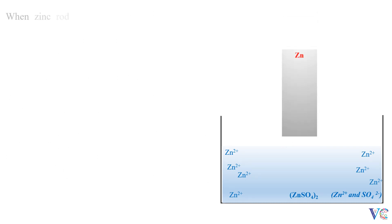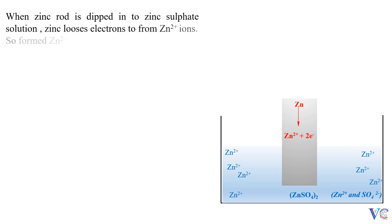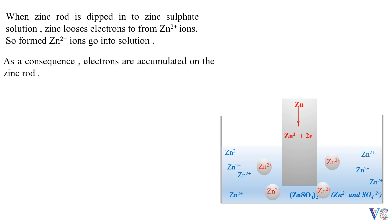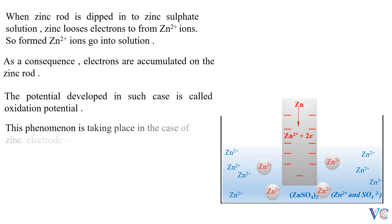When a zinc rod is dipped into zinc sulfate solution, zinc loses electrons to form Zn²⁺ ions. The so-formed Zn²⁺ ions go into solution. As a consequence, electrons are accumulated on the zinc rod. The potential developed in such case is called oxidation potential. This phenomenon takes place in the case of the zinc electrode, as the solution pressure is more than the osmotic pressure.